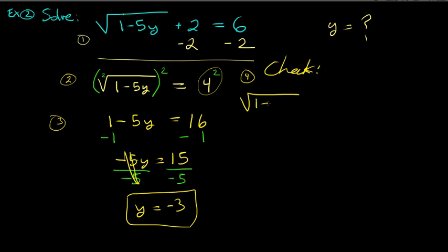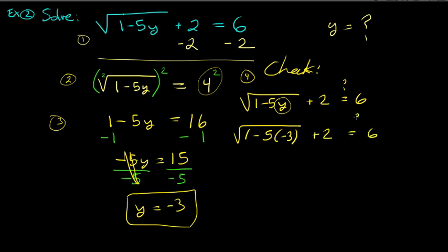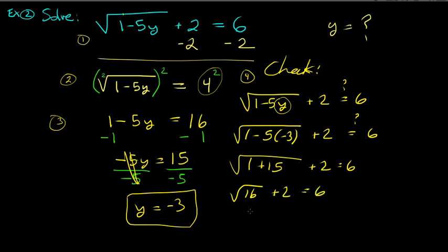The original equation was: the square root of (1 minus 5y) plus 2 equals 6. Replace y with negative 3: we get 1 minus 5 times negative 3, which is 1 plus 15 equals 16. The square root of 16 is 4, and 4 plus 2 is 6. That works — y equals negative 3 is correct.